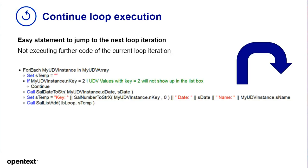Another thing related to loop execution is the continue statement. In a certain condition, if you just want to jump out of the iteration of a loop, you use the continue statement. For example, if my UDB instance dot n key equals two, then I'm jumping out of this loop iteration and going to the next one. All the code after that continue statement will not be executed — a nice control statement to have for your loop coding.